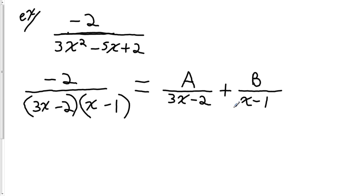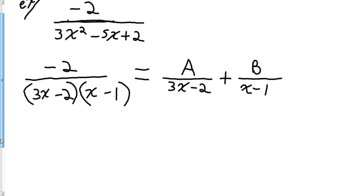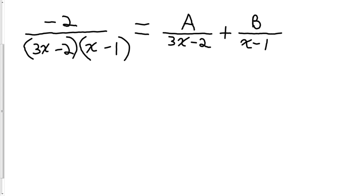So the single rational expression on the left side can be written as two different partial fractions, each having a denominator that is one of the factors of the original rational expression and a numerator that is a constant since the denominators are both linear. My next goal is to solve for A and B. To do that, we're going to clear the fractions by multiplying through by the least common denominator.